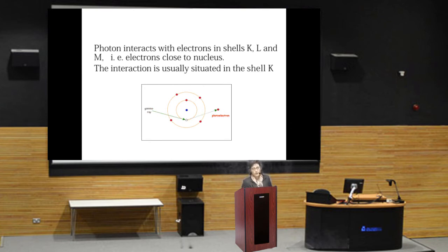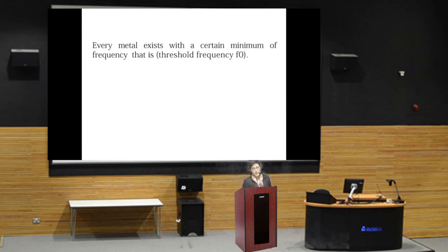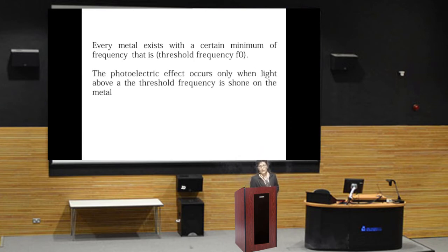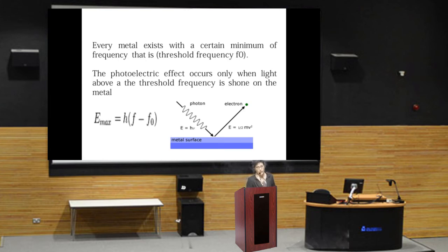Every metal exists with a certain minimum frequency, the threshold frequency F0. The photoelectric effect occurs only when light above the threshold frequency is shone on the metal. The energy of the emitted electron depends on the frequency of the incident light. If the light frequency is higher than the threshold frequency F0, the energy of the photoelectron ranges from 0 to a certain maximum energy. E maximum equals H times (F minus F0), where F0 is the threshold frequency.